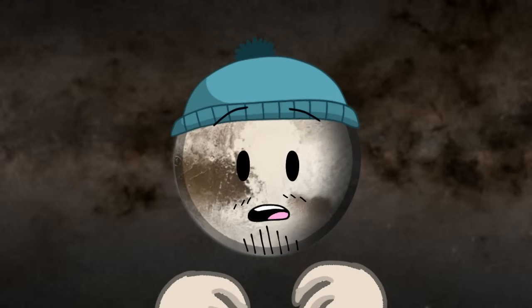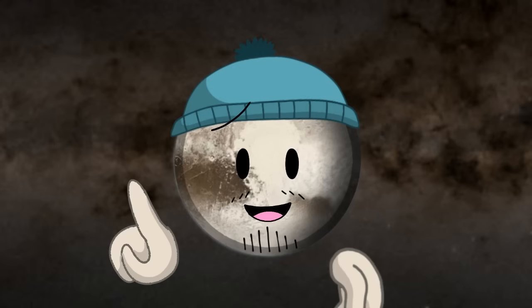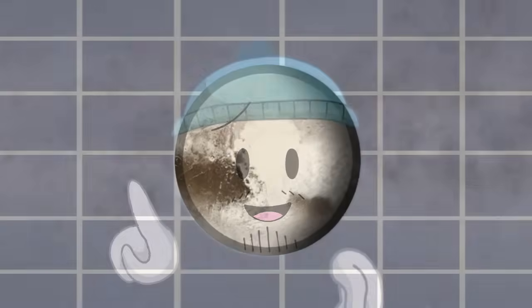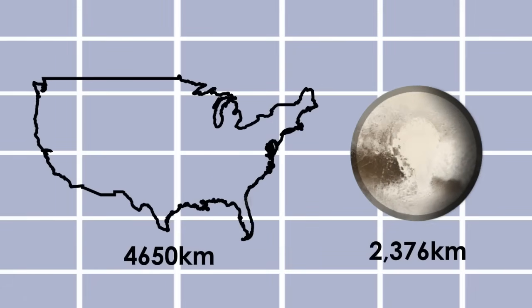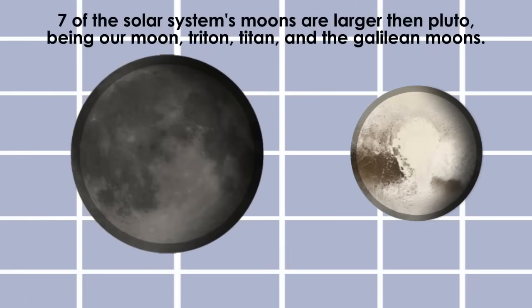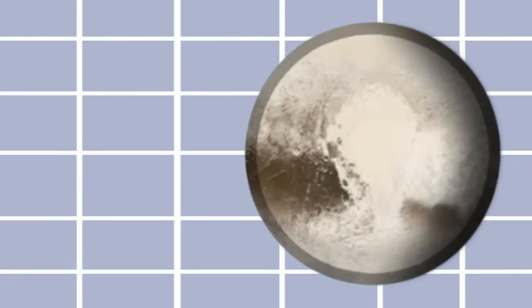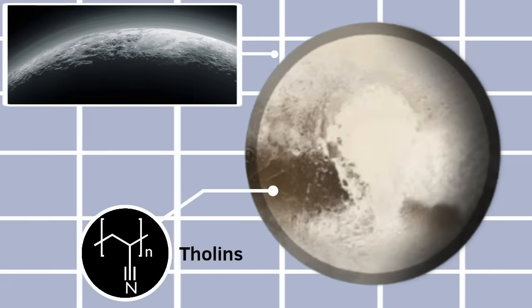But, despite that, I'm the largest and brightest dwarf planet in the Kuiper Belt, being around half the size of the United States. I'm even smaller than Earth's moon. My surface is cold and barren, with chemicals called tholins on the dark regions.